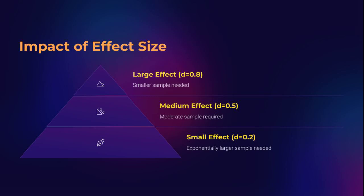Effect size is the heartbeat of sample size calculation — it tells you how big a difference you expect to see between groups. Cohen's D gives you a standard: 0.2 is small, 0.5 is medium, 0.8 is large. The smaller the expected effect, the larger your sample size must be to detect it, because subtle changes are harder to distinguish from random noise. Imagine detecting a 1 mm change in tumor size — it needs far more participants than identifying a 5 mm reduction. Always base your effect size on prior evidence, meta-analyses, or pilot data.